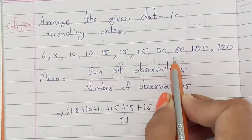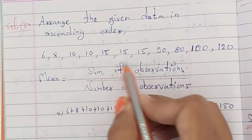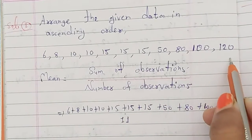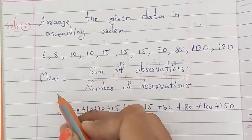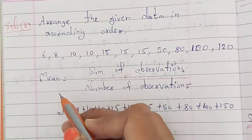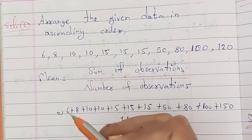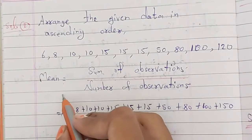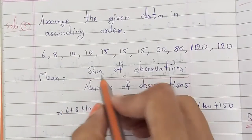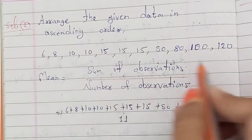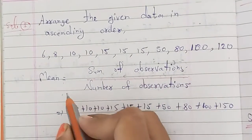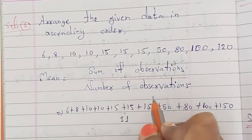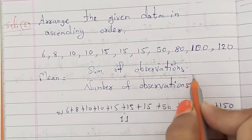The data given in ascending order is: 6, 8, 10, 10, 15, 15, 15, 50, 80, 100, 120. Now, let's find the mean first. Mean means sum of observations divided by number of observations — that is the formula for mean.